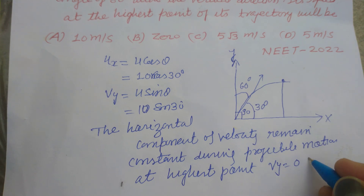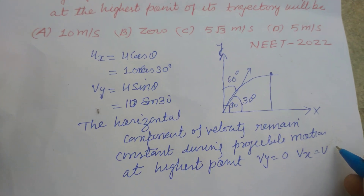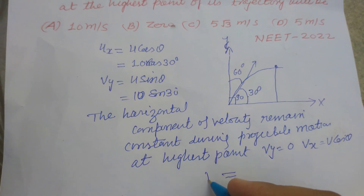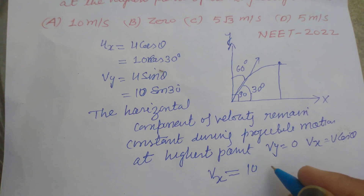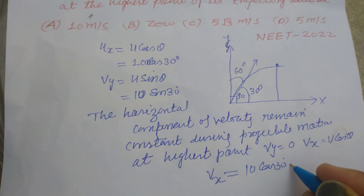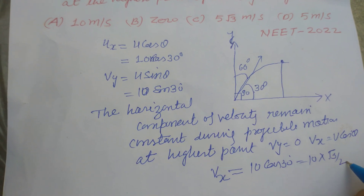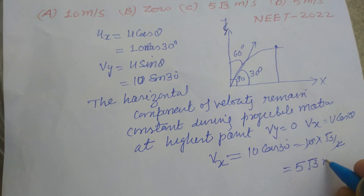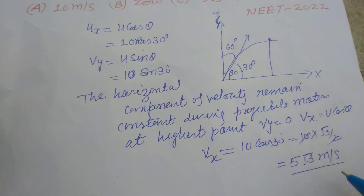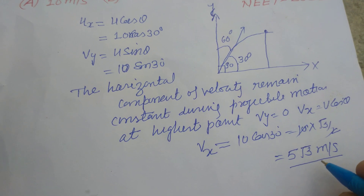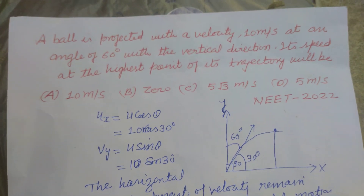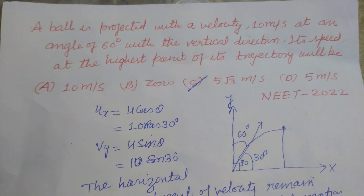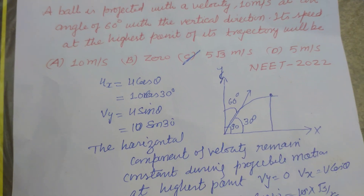Therefore, vx = v·cos(theta) = 10·cos(30°) = 10 × (√3/2) = 5√3 meters per second. This is the velocity of the particle at the highest point of the trajectory. So the answer to this question is option C: 5√3 meters per second. I hope you got it, thanks for watching.